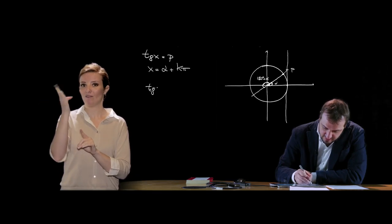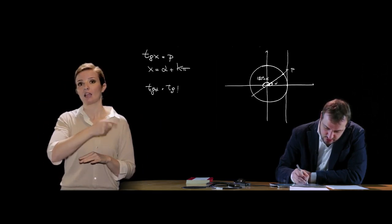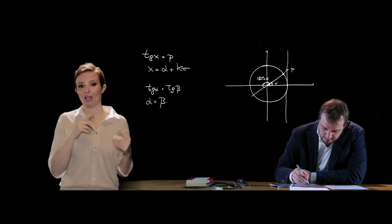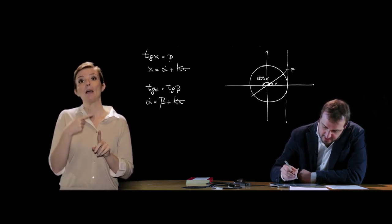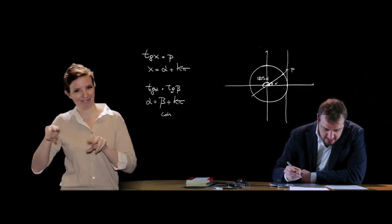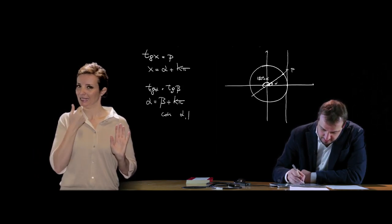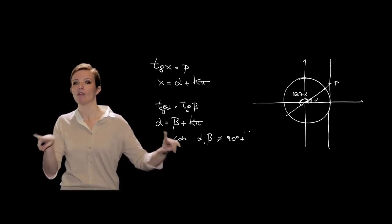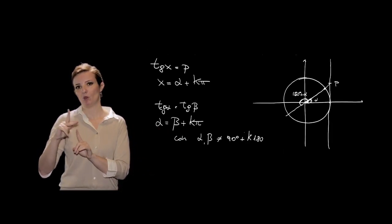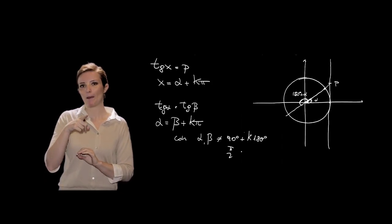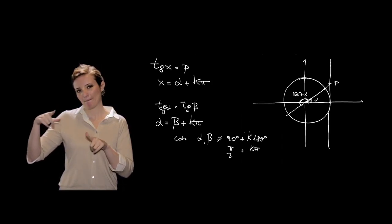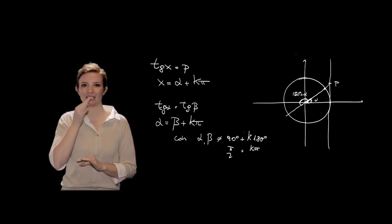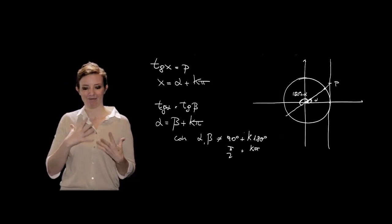Se tan α = tan β, la soluzione è α = β + kπ. Bisogna però specificare che α e β devono essere diversi da 90° + k·180°, ovvero π/2 + kπ, dove la tangente tende a infinito e quindi non rientra nell'insieme delle soluzioni reali.